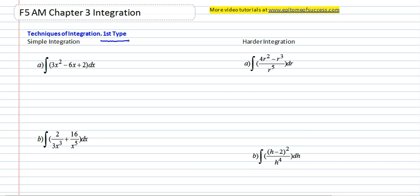The first type is simple algebraic functions that are separated by terms, by plus and minus. So you have 3x squared minus 6x plus 2 and integrate it in terms of x. That's what the dx means here.